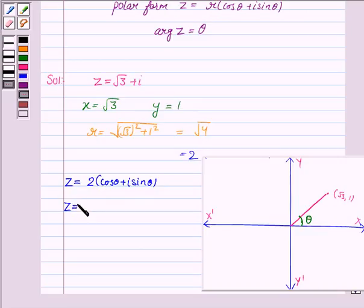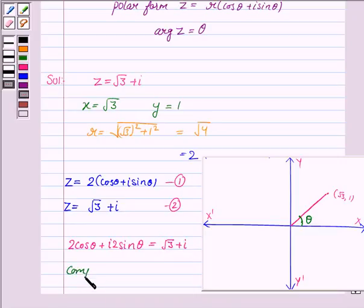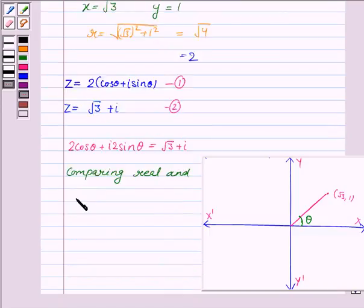Also z is equal to root 3 plus iota. Now let us call this equation as 1 and this as 2. Now since LHS of both the equations are same, therefore RHS are also same. So we have 2 cos theta plus iota 2 sin theta is equal to root 3 plus iota. Now comparing real and imaginary part.